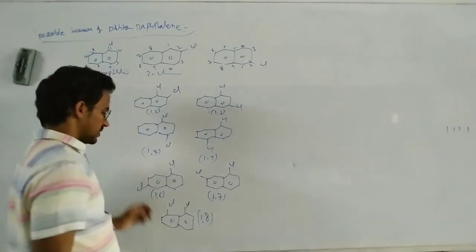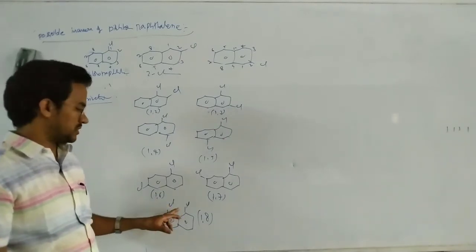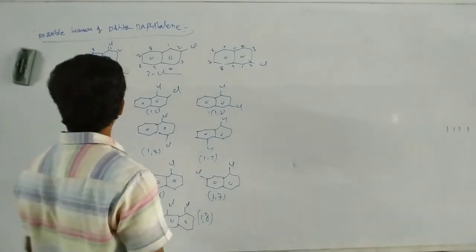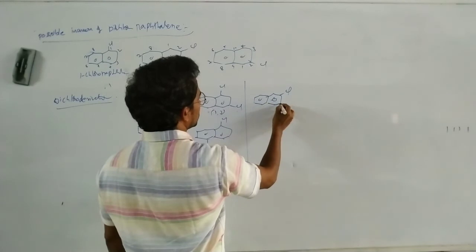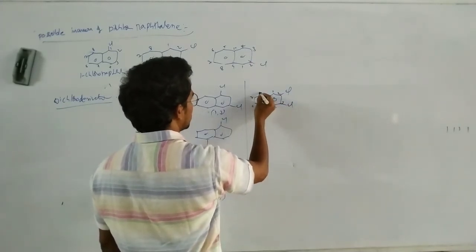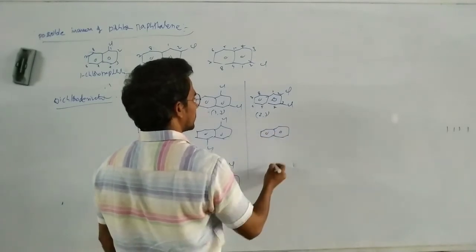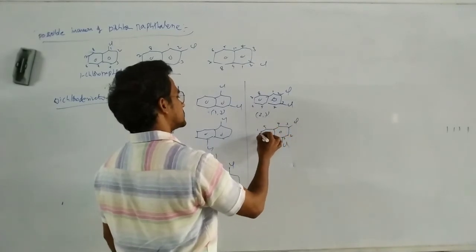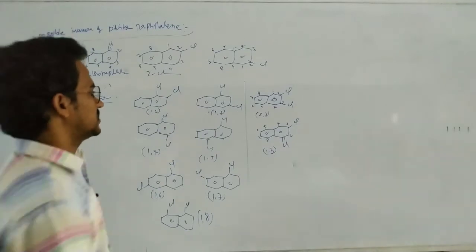This is 1,8-dichloro. Note: we should not number through the wrong path — we must proceed through the ring. Counting 1, 2, 3, 4, 5, 6, 7, 8 gives 1,8. Next remaining isomer is 2,3-dichloro. The numbering 1, 2, 3, 4, 5, 6, 7, 8 confirms it is 2,3-dichloronaphthalene.